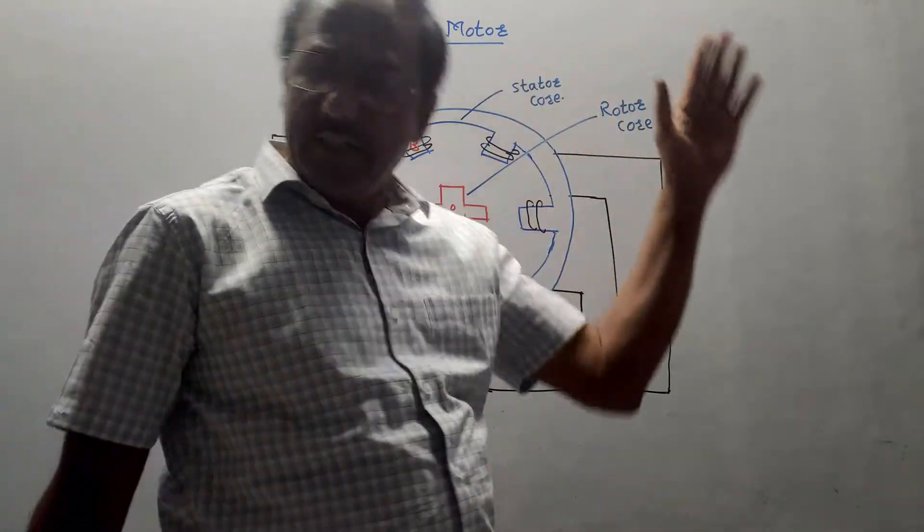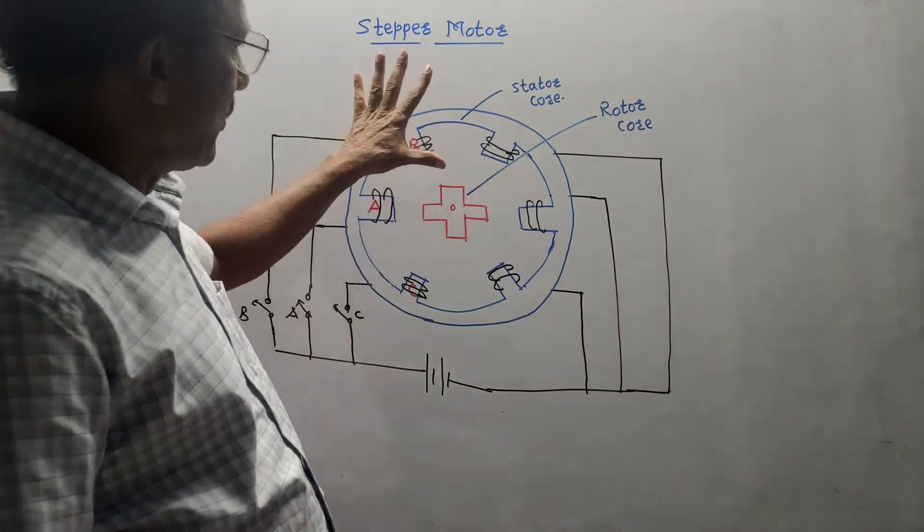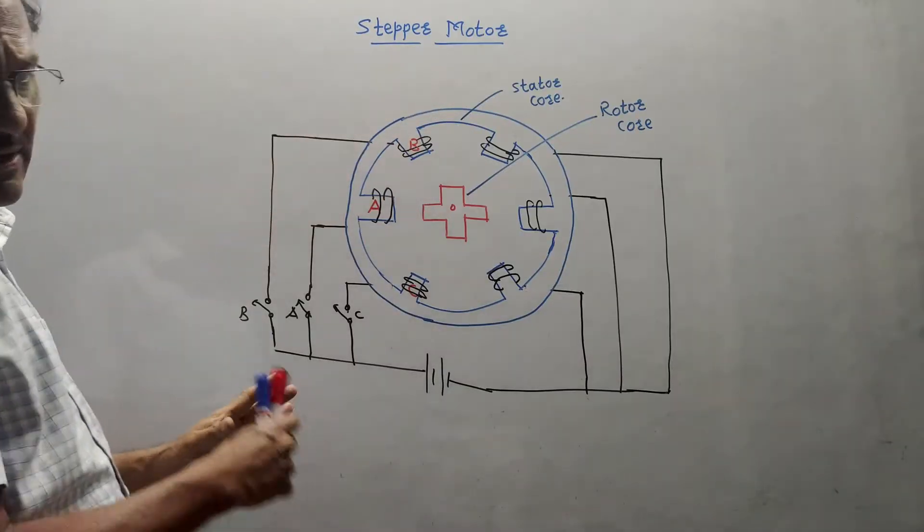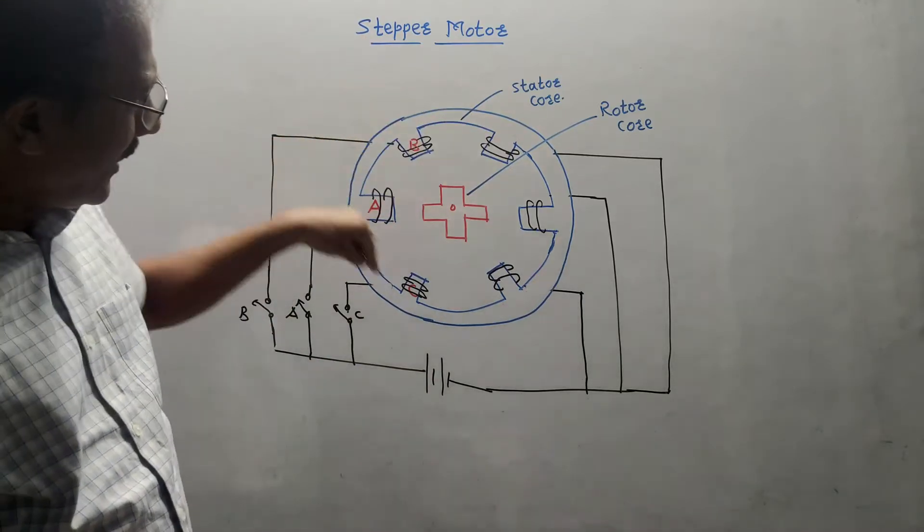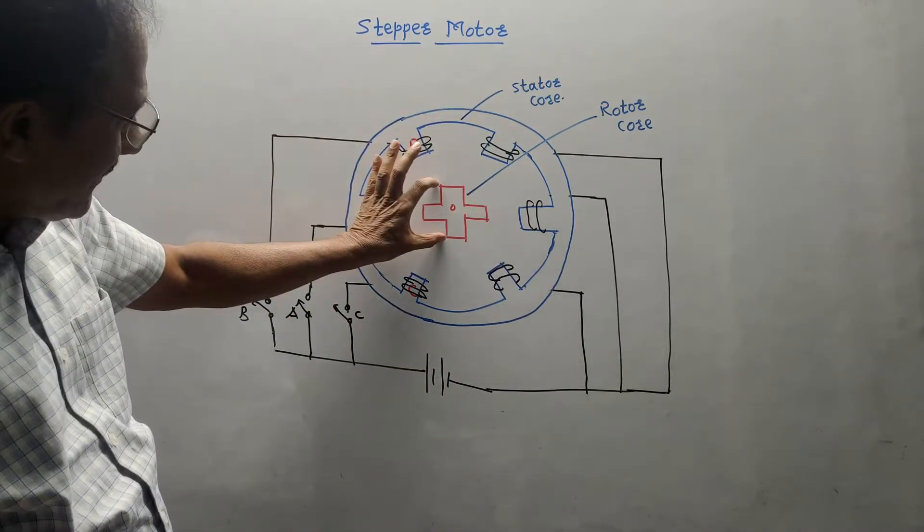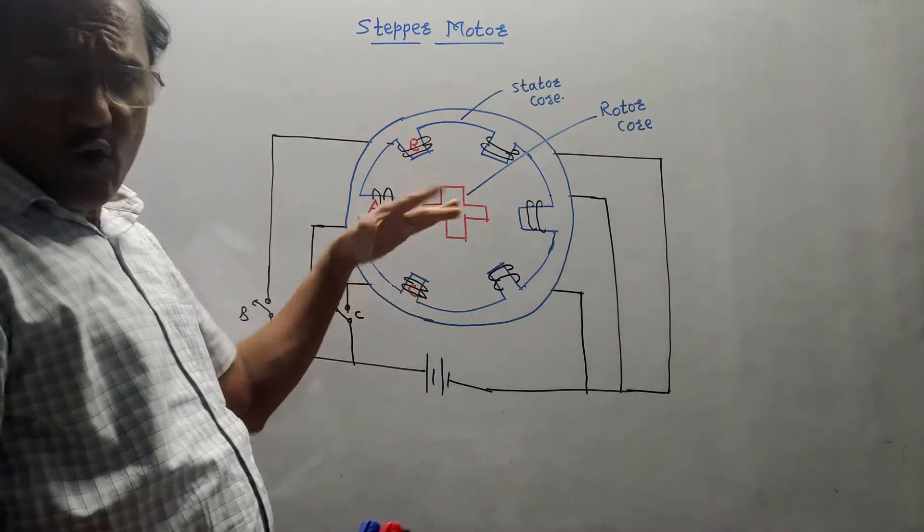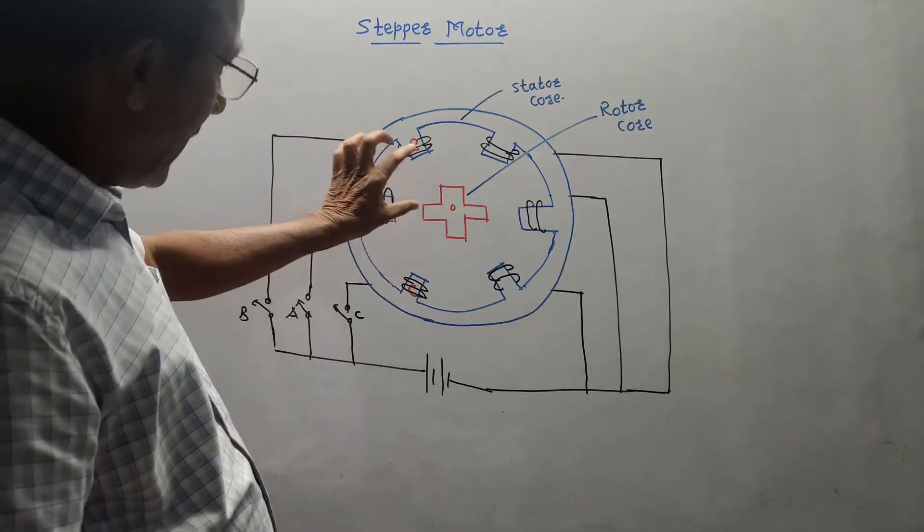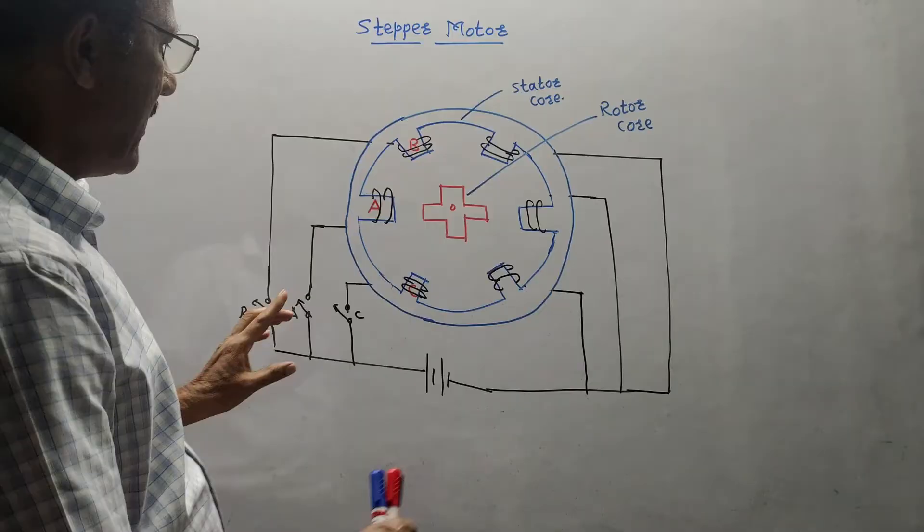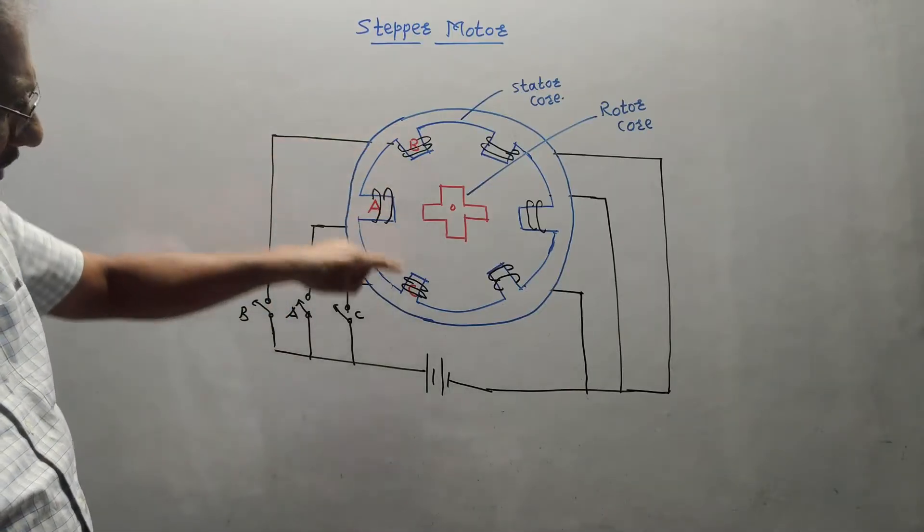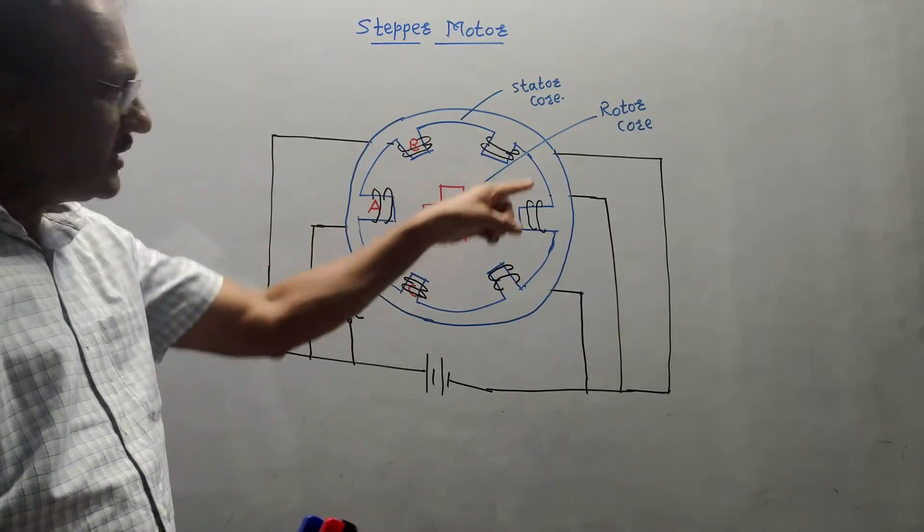Next part is stepper motor. It is basically single stack variable reluctance stepper motor. This is the diagram of particular stepper motor. The operation is pretty simple. It consists of a stator core, this outer side and this one which I have drawn with the red color pen. It is the rotor core. I have shown a different number of teeth. For example, for rotor, I have shown 4 teeth. For stator, I have shown 6 teeth. I have given different names like A, B, C and so on for winding. There are different windings on the stator core on each stator.